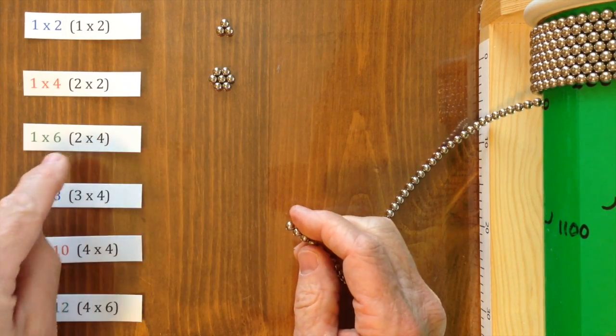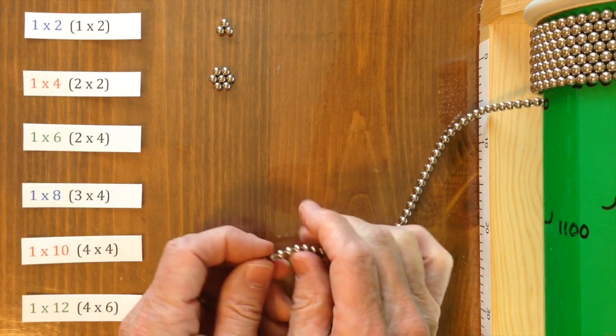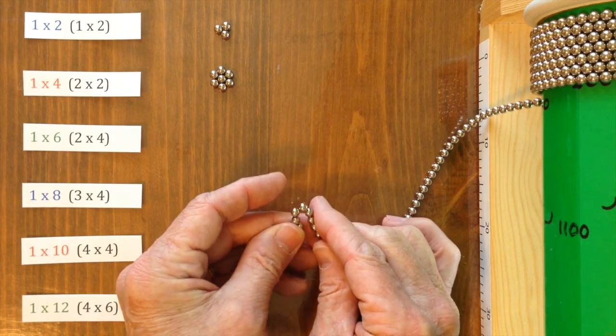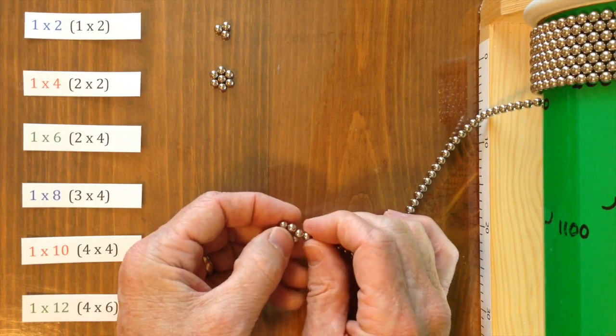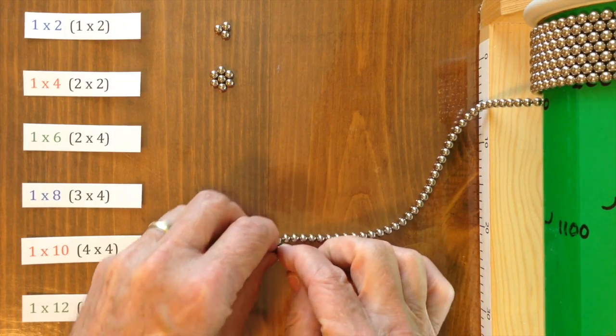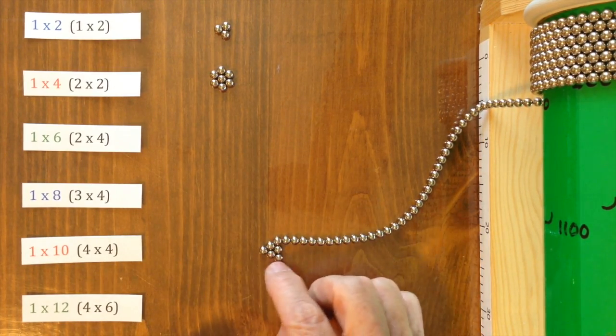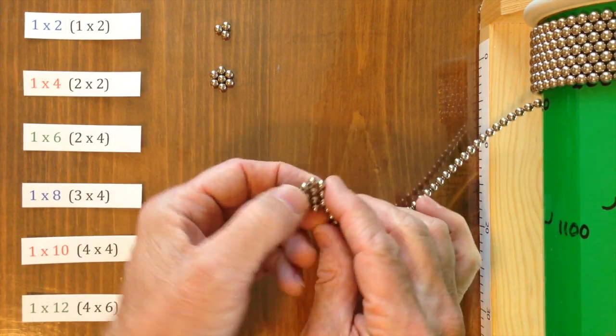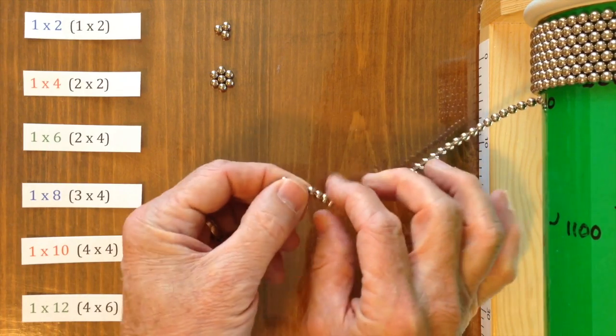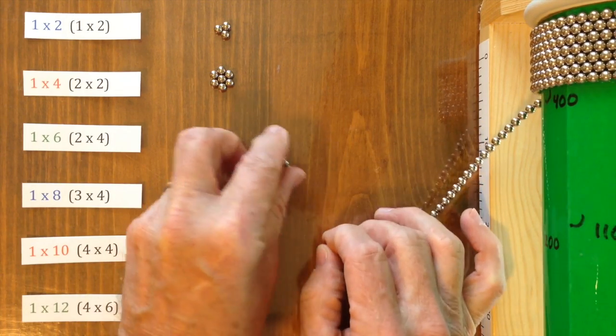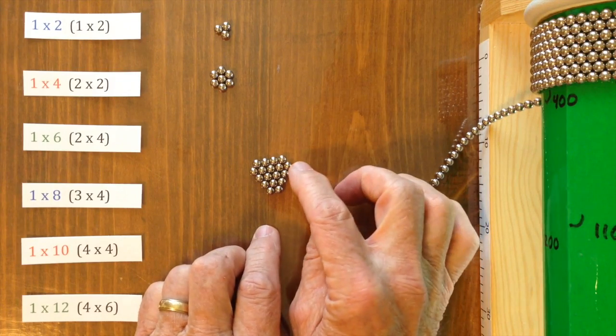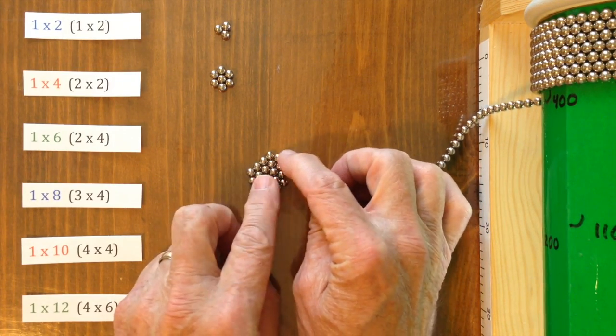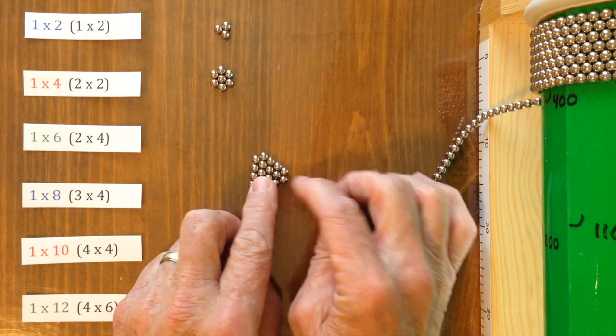There's a 2 by 2. Then we need a 2 by 4. That is also a hexagon. And to make that, you start off with a 1 by 3 and then add another layer around it. Now you can finally understand what we mean by 2 by 4. There's 2. There's 4. 2, 4.